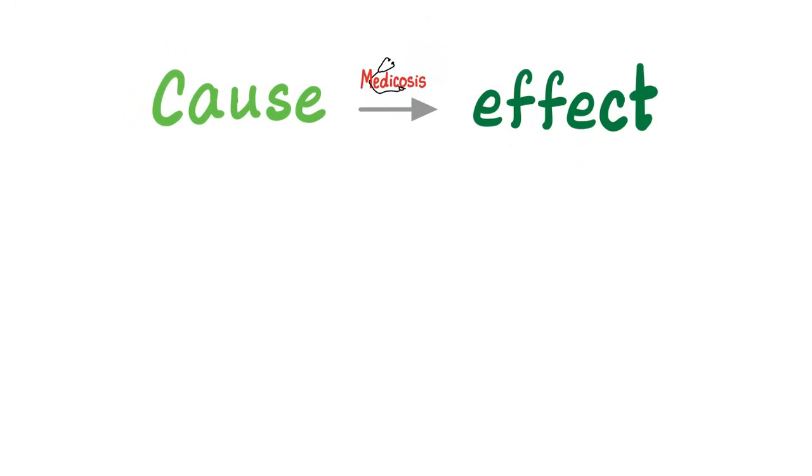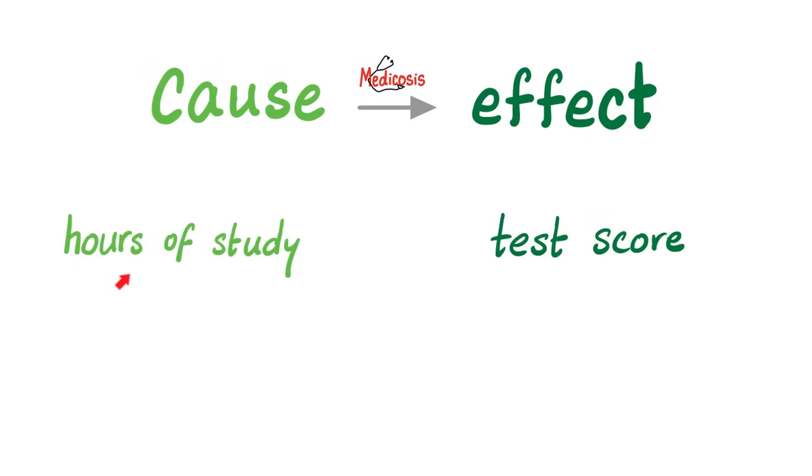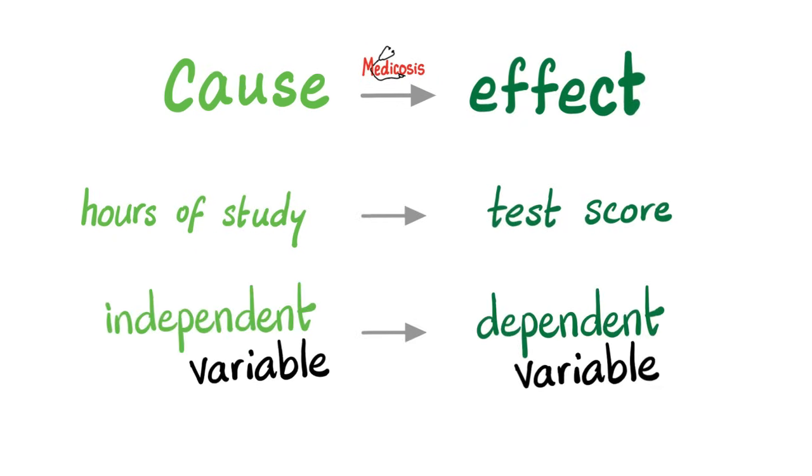How do we do it? I want you to think of cause and effect. The cause has to happen before the effect. You need to study first, and then you take the test and get the score. Cause and effect. The cause is the independent variable. The effect is the dependent variable. Why? Because the effect is dependent on the cause. The test score is dependent on the hours of study. That's why we call this one dependent and this one independent.